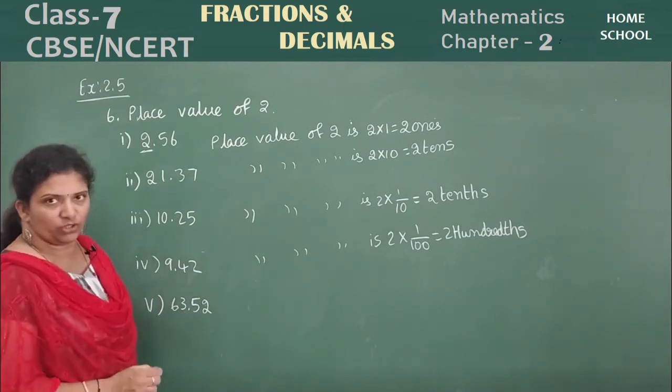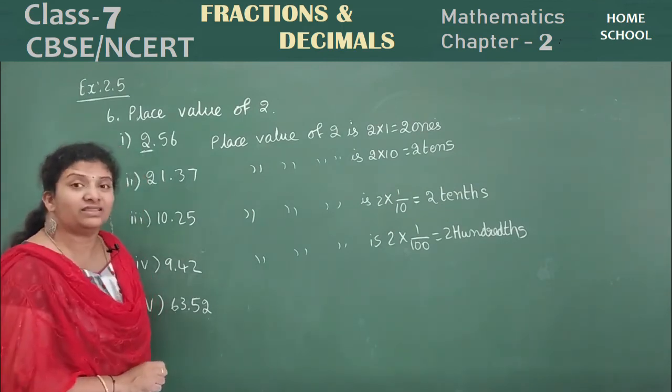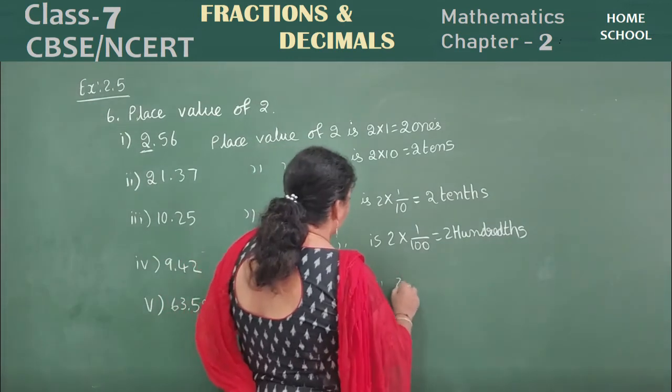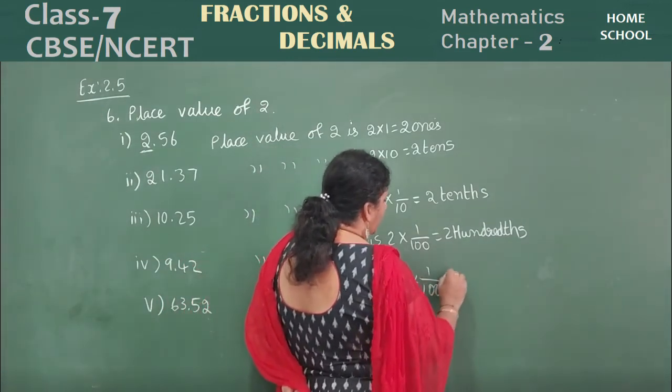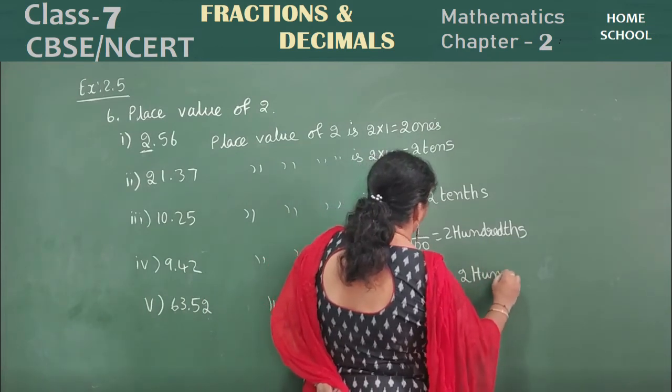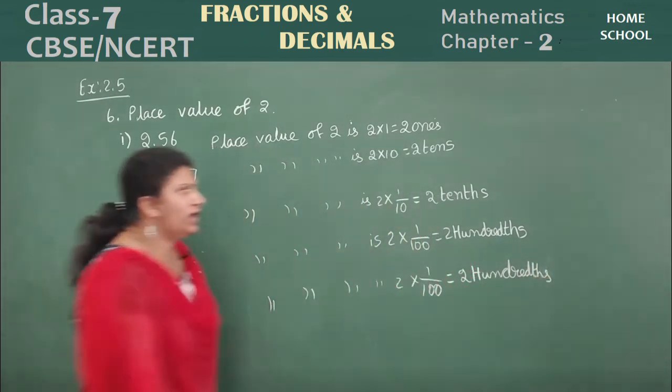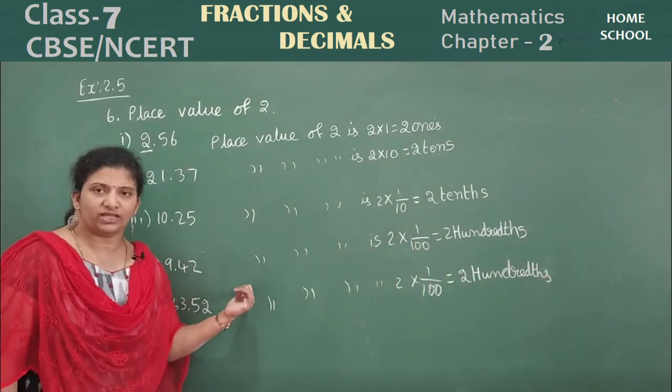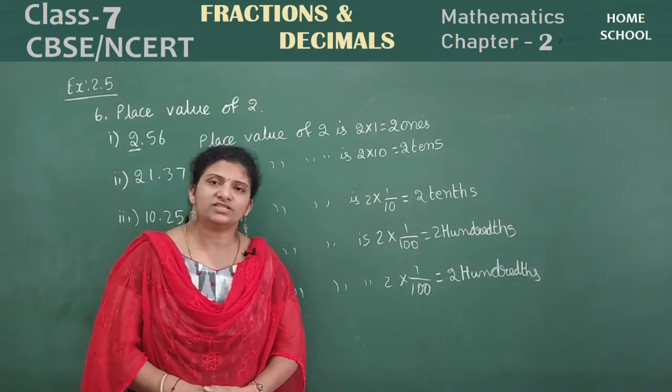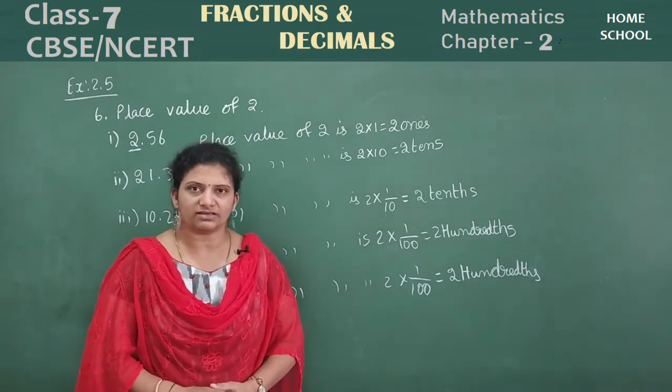Next one, 63.52. Means where is the 2 place value? This is also in hundredth place. That is, place value of 2 is 2 into 1 by 100 is equal to 2 hundredth place it was there. Okay? This is the way we need to find the place values. Okay? With this we are going to end our session. In our next session we are going to continue with the next main of this exercise. Thank you all.